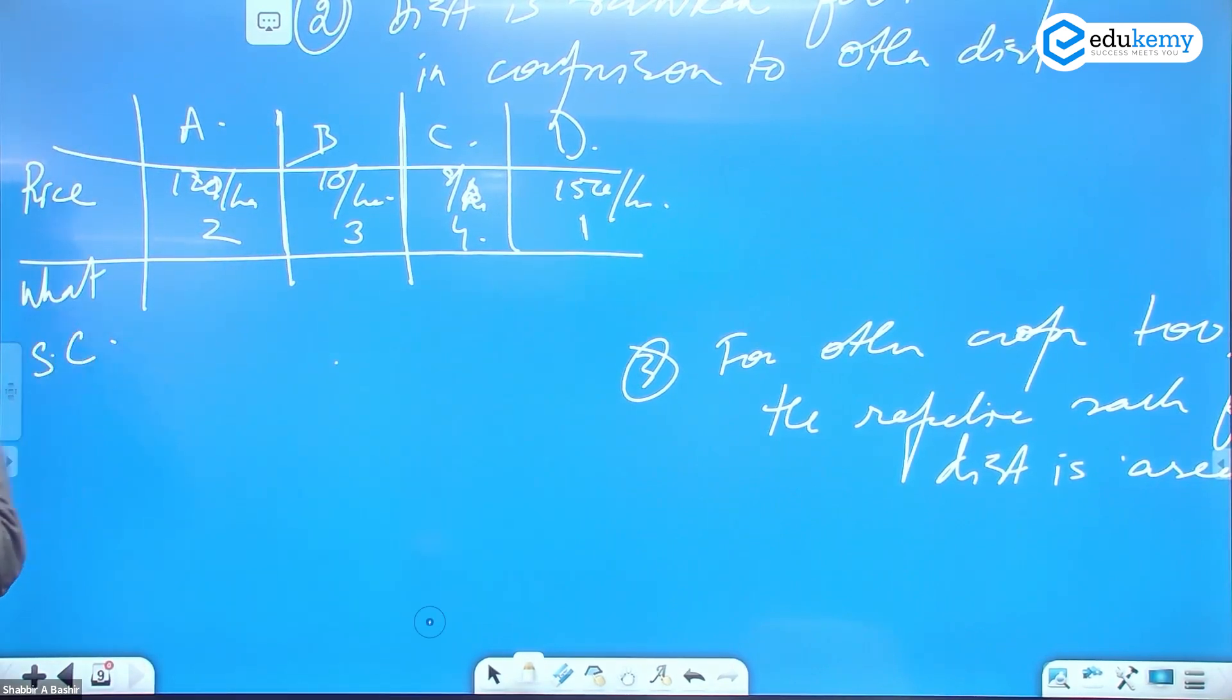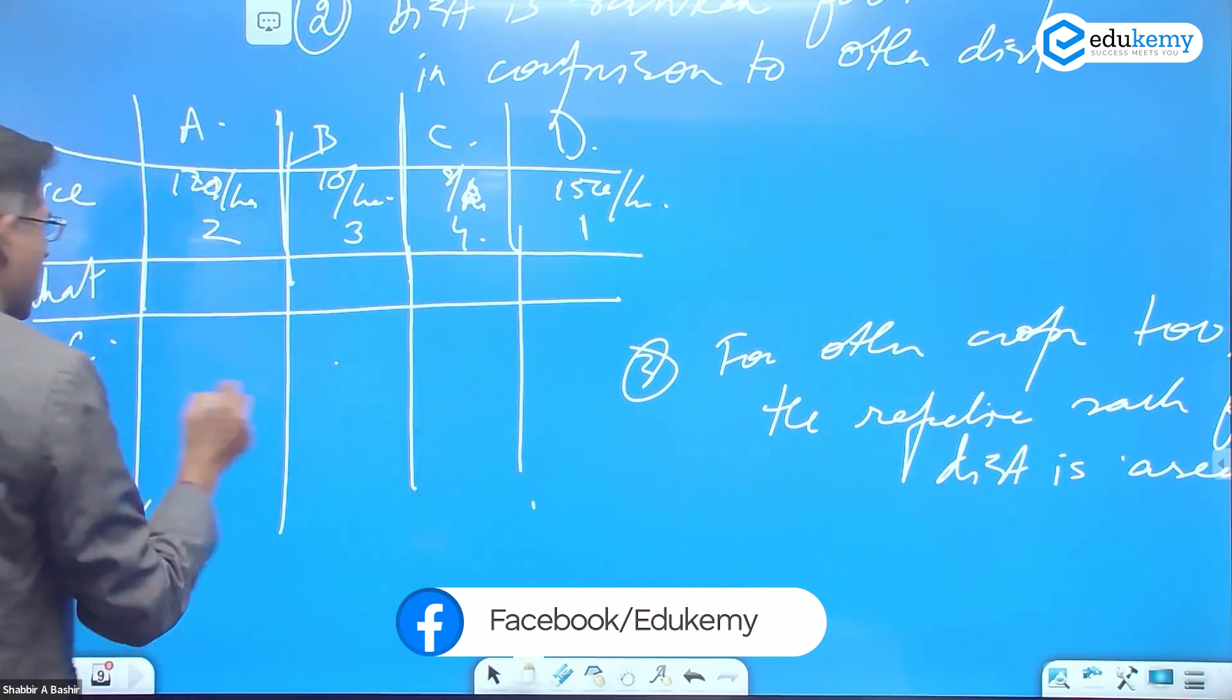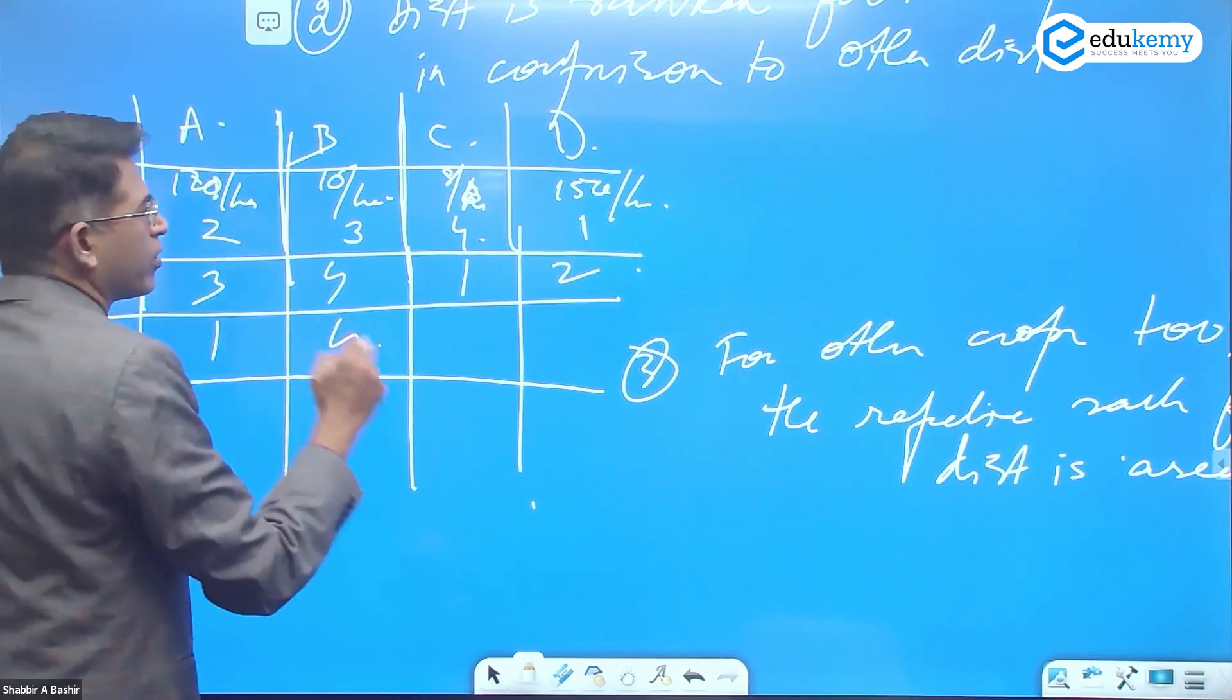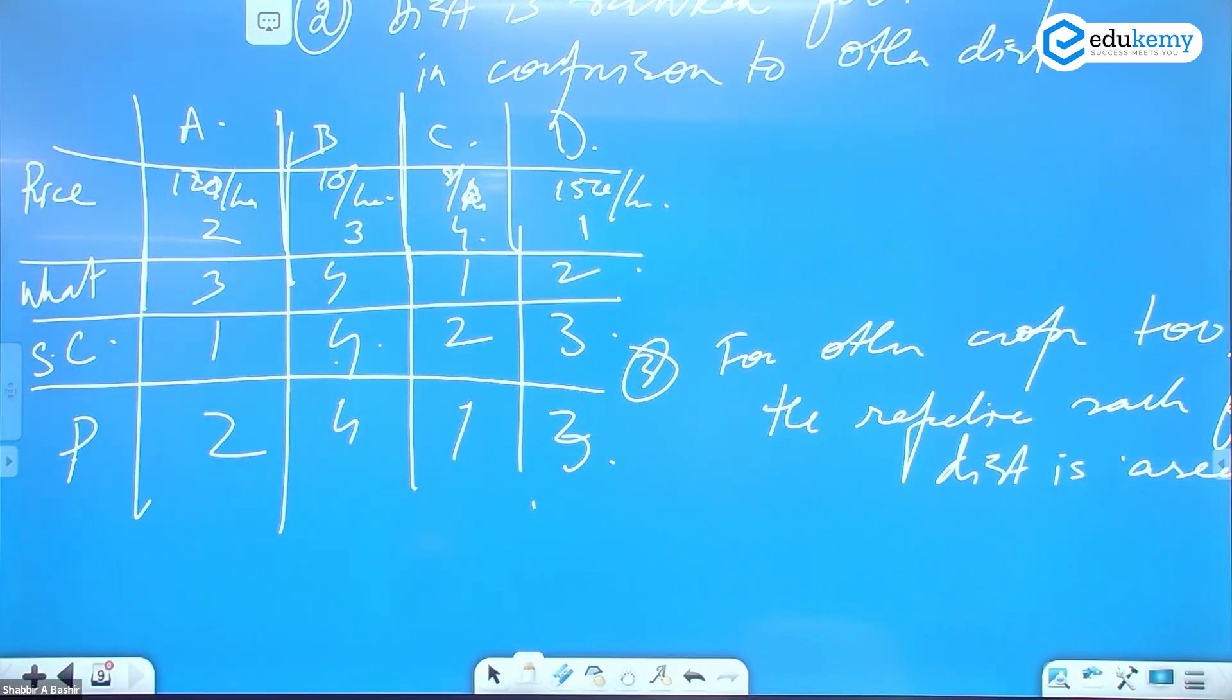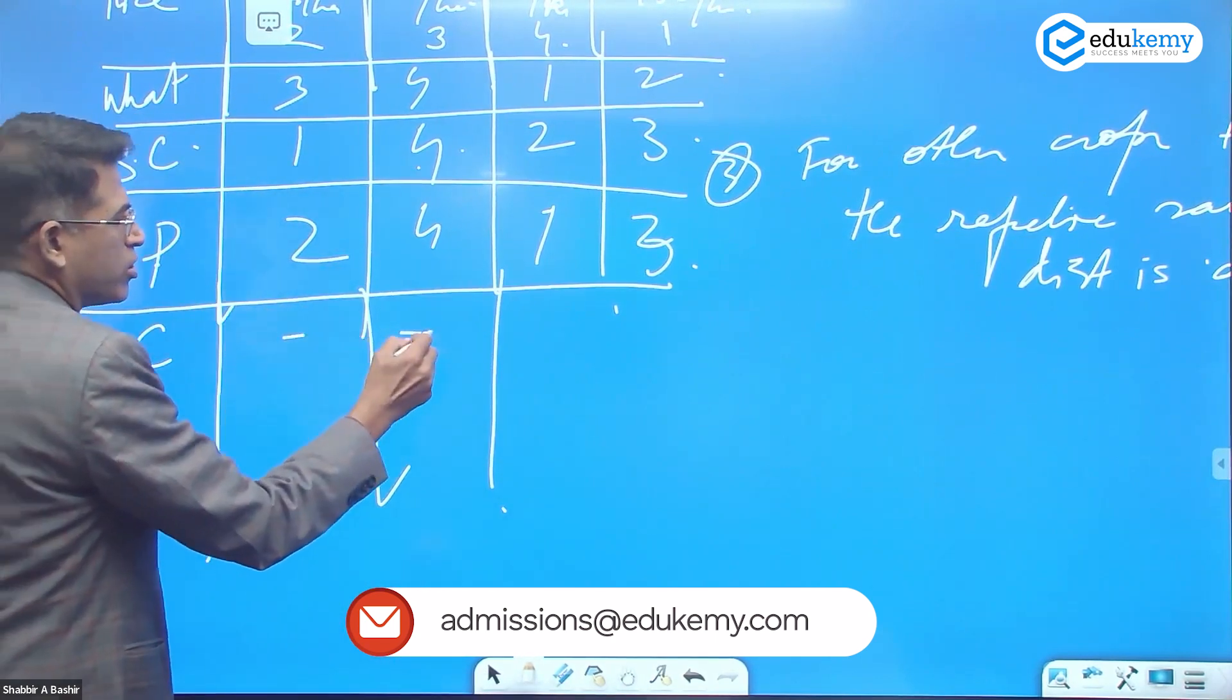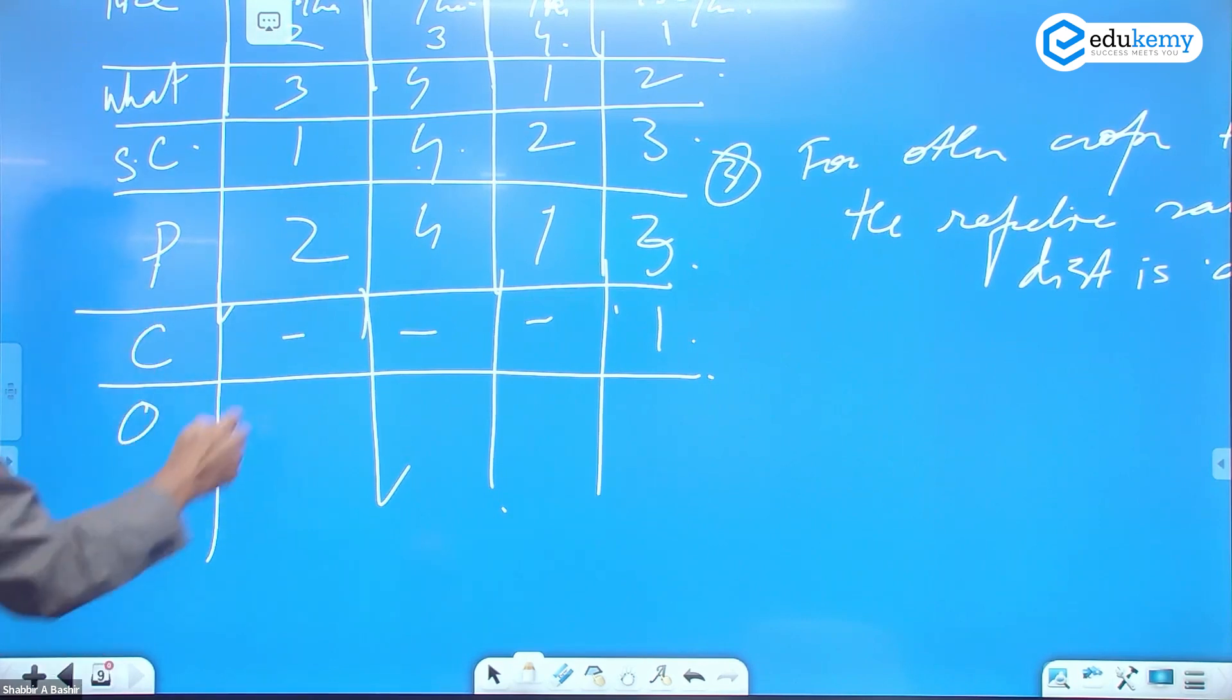For pulses: rank 3, rank 4, rank 1, rank 2. For wheat: this is rank 3, rank 4, rank 1, rank 2. For sugarcane: rank 1, rank 4, rank 2, rank 3. For pulses of a specific type: rank 2, rank 4, rank 1, rank 3. For each crop you do the ranking. You take up a crop, say cotton, and you rank 1, rank 2. You take oranges and you rank 1, rank 2.